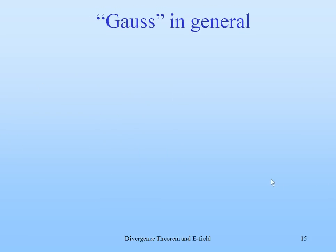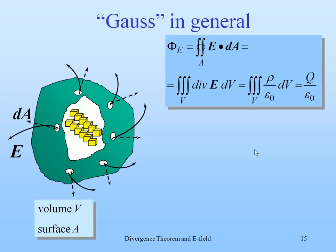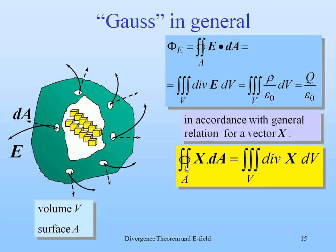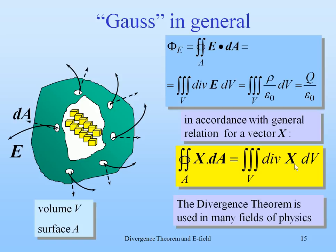Gauss in general. Here is the flux law again. Gauss law. And for a general vector x, the flux law can be written as, for the x times the A integrated over the surface, is the volume integral of the divergence. And that divergence theorem is used in many fields of physics. Scattering, fluid dynamics, particle transport, and so on.